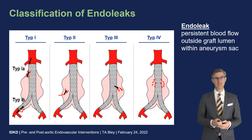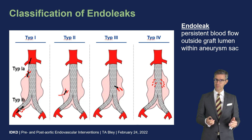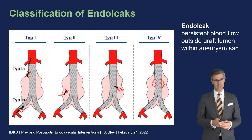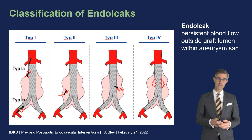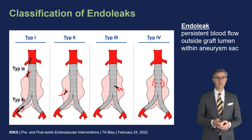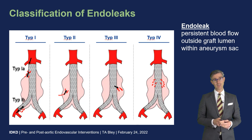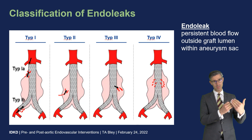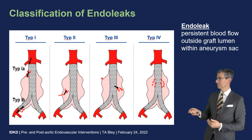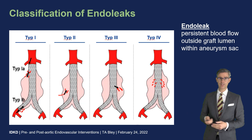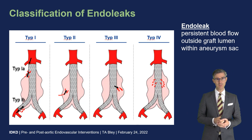Type II endoleaks are more frequent and are low-pressure endoleaks due to reverse flow — as in our case — from the inferior mesenteric artery or lumbar arteries. Type III endoleaks are high-pressure endoleaks due to rupture of the stent graft material or misalignment at the junction of the leg with the main body. If there is misalignment, aortic blood flow could be directed straight into the aneurysm sac — a high-pressure endoleak that needs to be addressed immediately, typically with stent-in-stent.